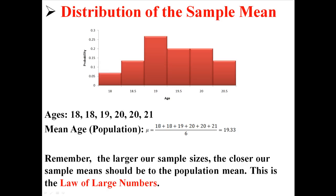That makes sense. If everyone in the population was in your sample as well, you would have a very accurate representation of what the population mean is. The larger your sample is, the better your estimate of the population mean will be.